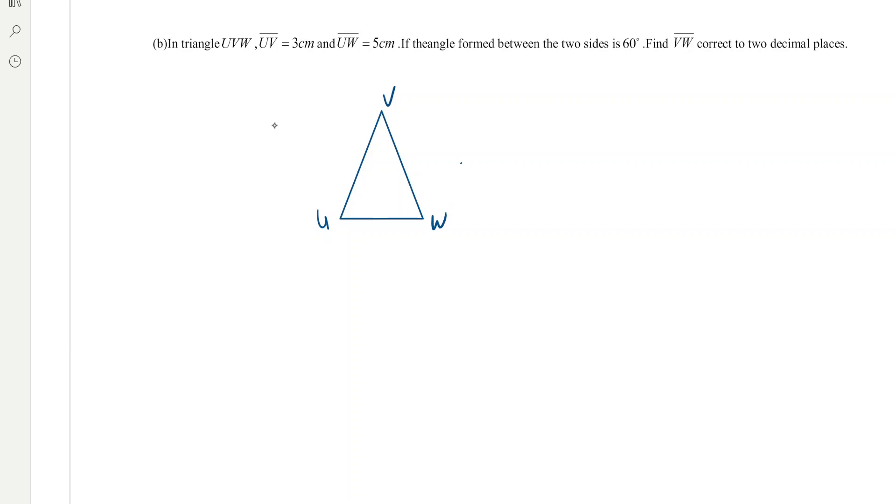So we are told that UV is 3 centimeters, UW is 5 centimeters, and the angle between is 60 degrees. Find VW equals to how much.